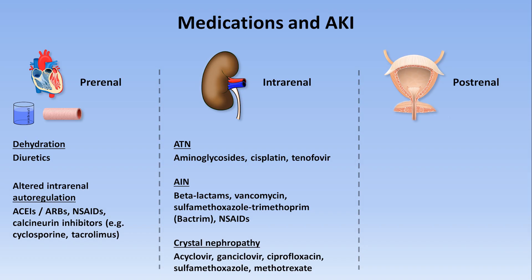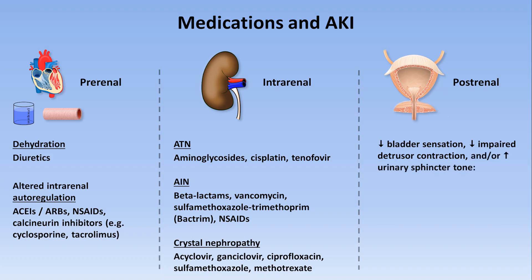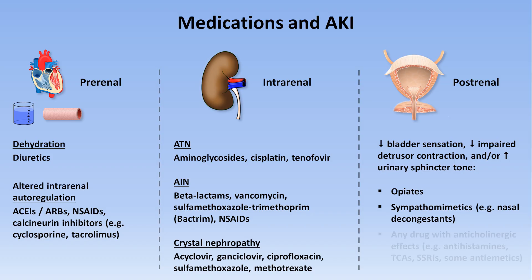With all these drugs, risk of precipitation is related to dose, urine pH, and whether the patient is volume replete or deplete. There are also many meds implicated with post-renal AKI, or acute urinary retention. They do this through some combination of decreased bladder sensation, interference with normal contraction of the bladder's detrusor muscle, and/or excessive tone of the urinary sphincters. The most common meds include opiates, sympathomimetics such as nasal decongestants, and any drug with significant anticholinergic effect, including antihistamines, tricyclic antidepressants, some SSRIs, and some antiemetics.